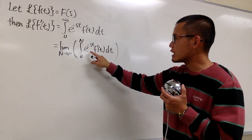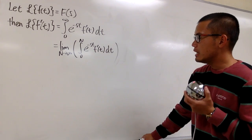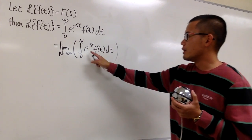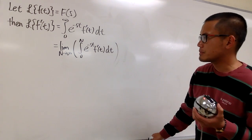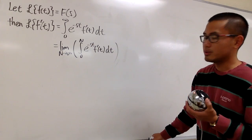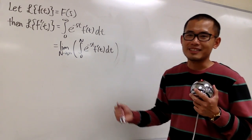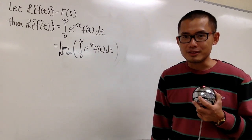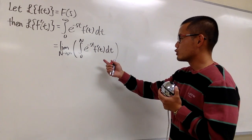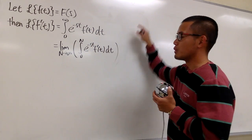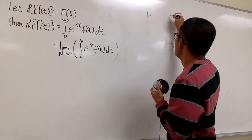How can we integrate the product of e to the negative st and f prime of t? It is a product of two things, and substitution wouldn't work. Let's try integration by parts — we'll be using integration by parts a lot. So let's work this out using the DI method. I'll set up the d and i columns and put down plus and minus.